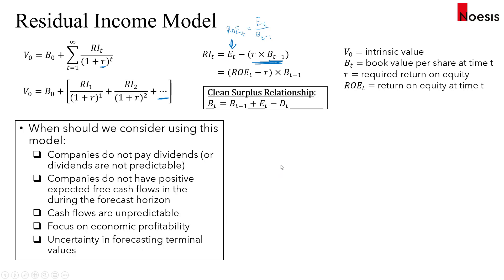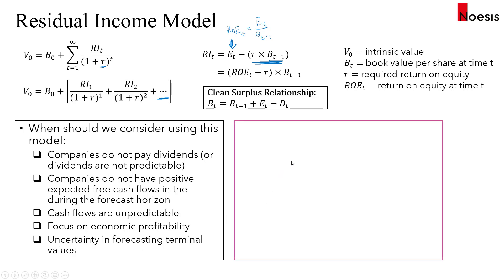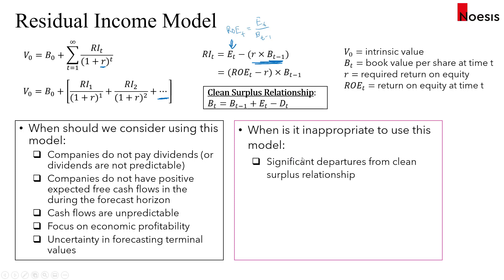When is it inappropriate to use the residual income model? If there are significant departures from the clean surplus relationship — for example, if many items bypass the income statement and go straight to other comprehensive income — then the clean surplus relationship would not hold.